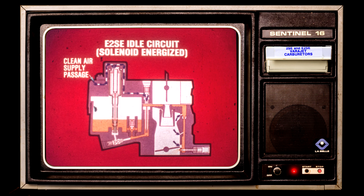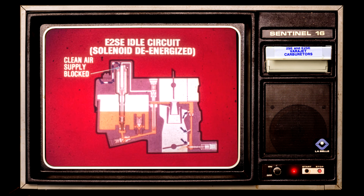The E2SE's idle circuit functions uniquely because the mixture control solenoid meters the air introduced into the mixture. When the solenoid is energized, a large supply of air is introduced through the clean air passage to lean the mixture. When de-energized, the solenoid plunger blocks the air in the clean air passage and fuel flows through both the main jet and the solenoid jet, enriching the mixture.